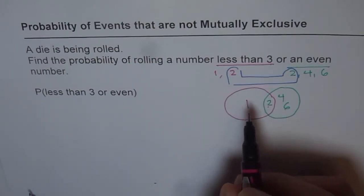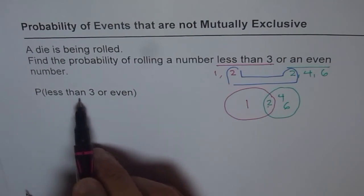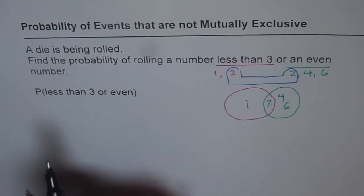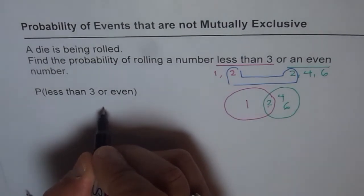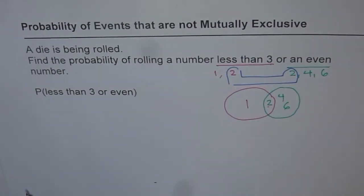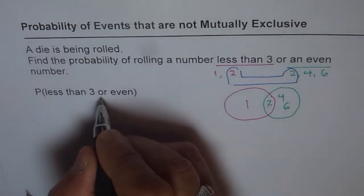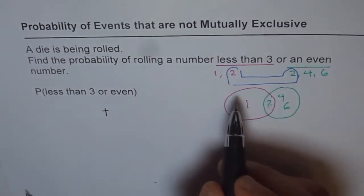So basically, when we are trying to find probability of less than 3 or even, or means plus. So or means plus. So what we will do is, we will translate it. In other words, or means plus.